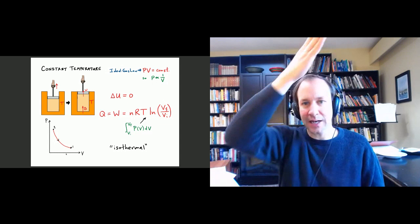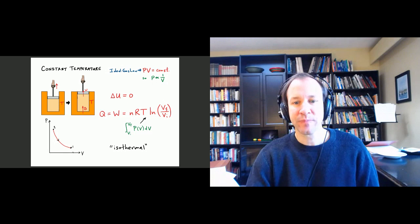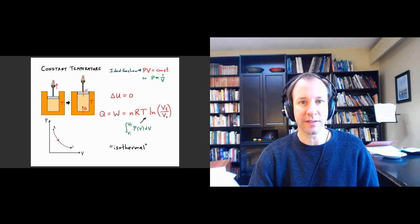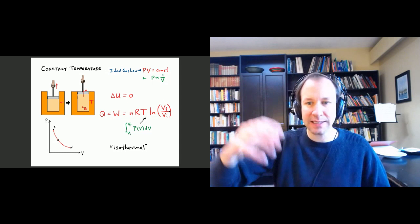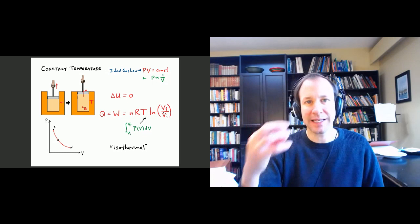Because it's not a simple shape — it's an inverse 1/x type function — we need to use some calculus. You did that in the tutorial last week. The final answer is that the area under the curve is nRT, where T is the constant temperature, times the natural logarithm of the ratio of the final over the initial volume. If the gas is expanding, the logarithm is positive and we get positive work; if contracting, negative.